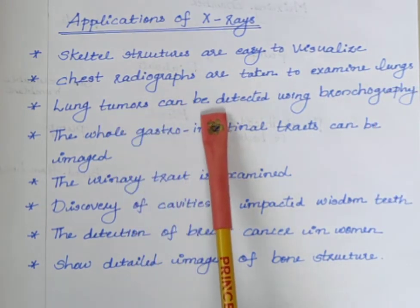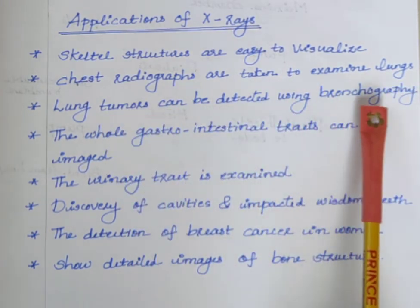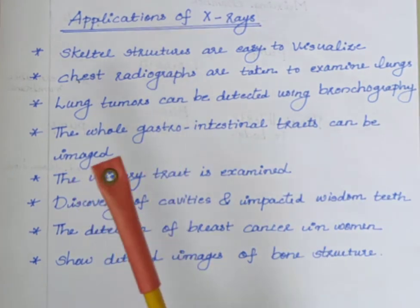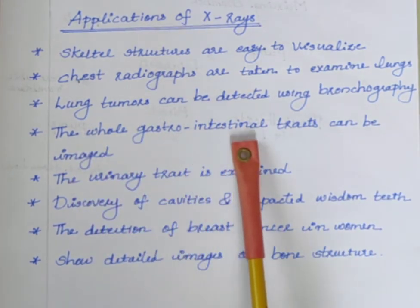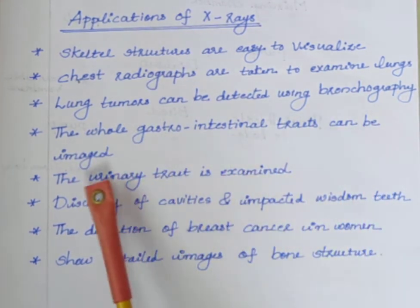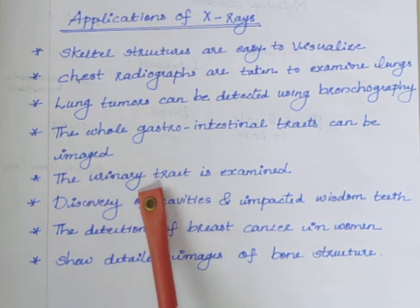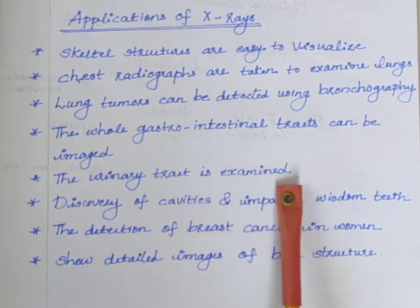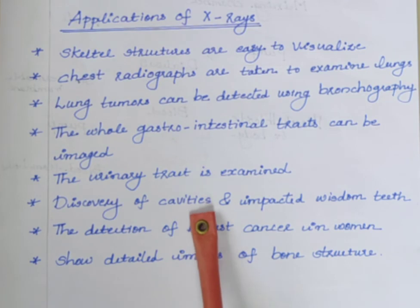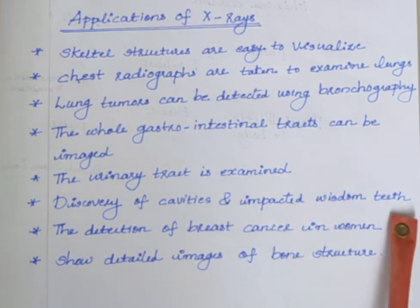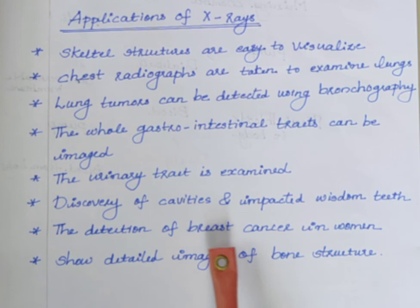Lung tumors can be detected using bronchography. The whole gastro-intestinal tract can be imaged. The urinary tract is examined. Discovery of cavities and impacted wisdom teeth. The detection of breast cancer in women. Show detailed images of bone structure. Thank you.